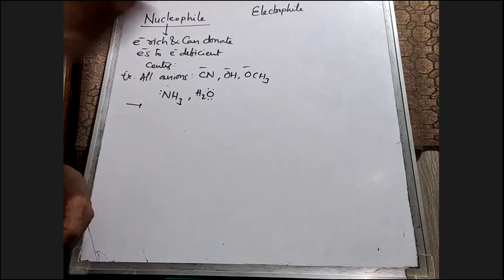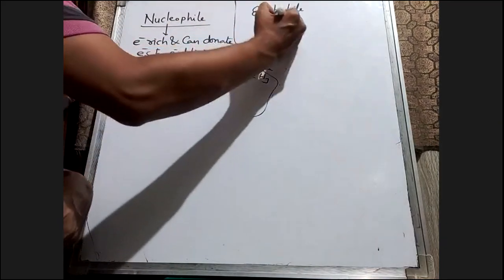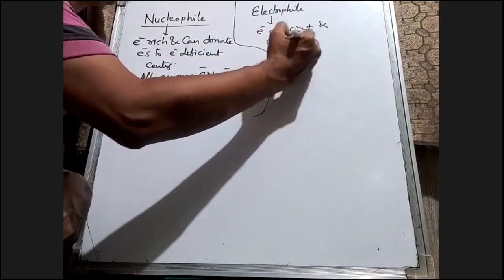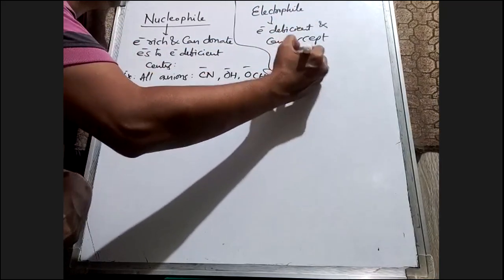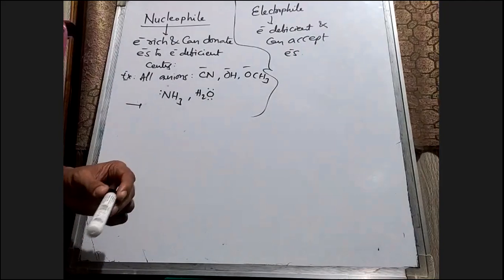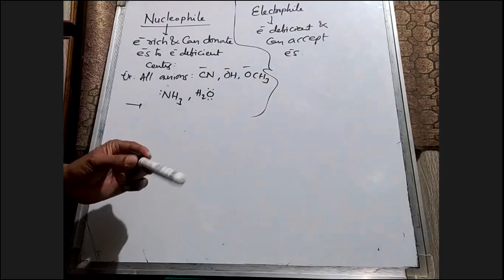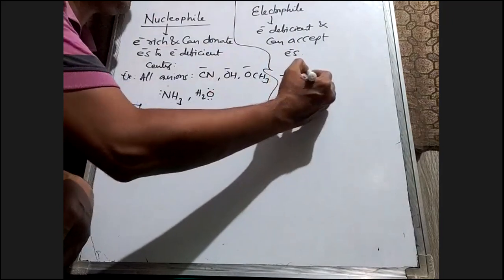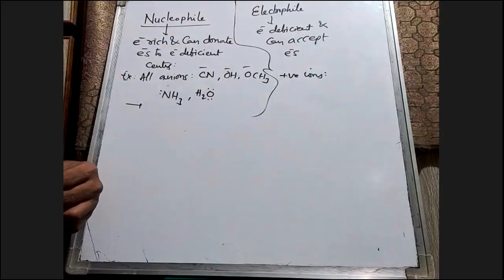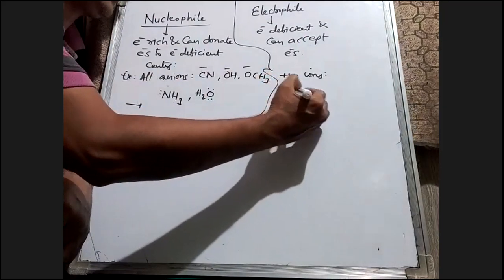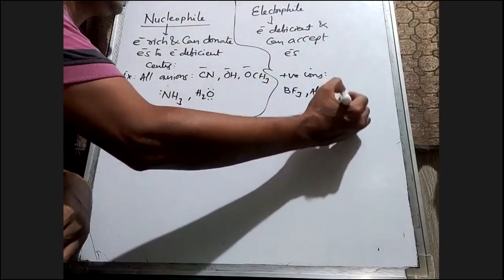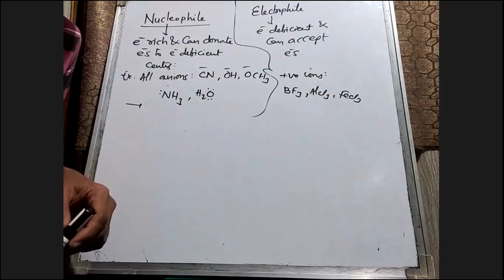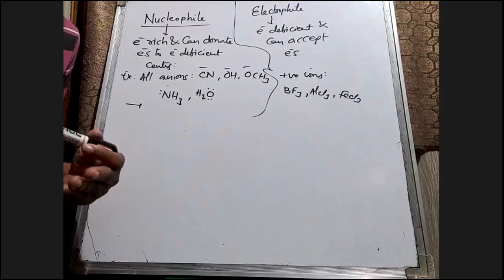The second one is the electrophile. What is an electrophile? An electrophile is a species which is electron deficient and can accept electrons. Generally, all positive ions act as electrophiles. Similarly, there are electron deficient species like BF3, AlCl3, and FeCl3 — all Lewis acids act as electrophiles, because they are electron deficient and can readily accept electrons from the donor.